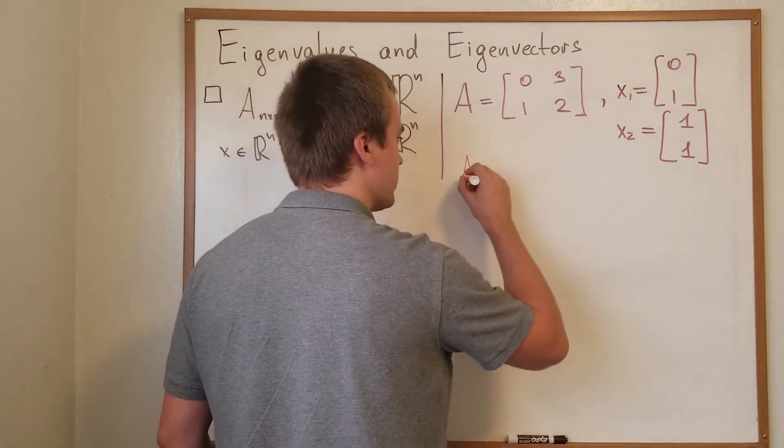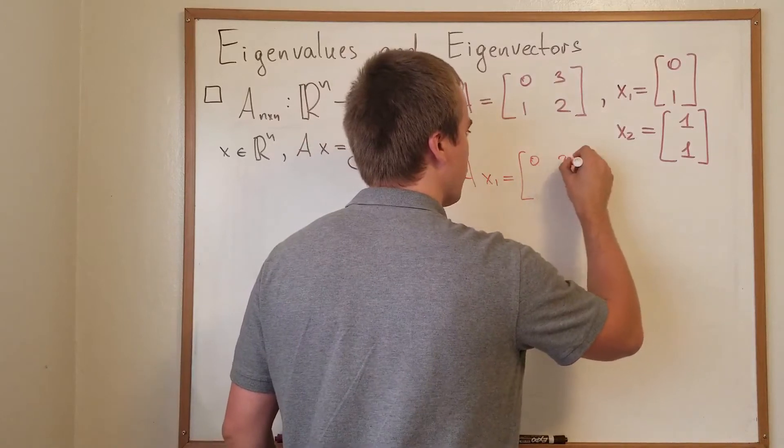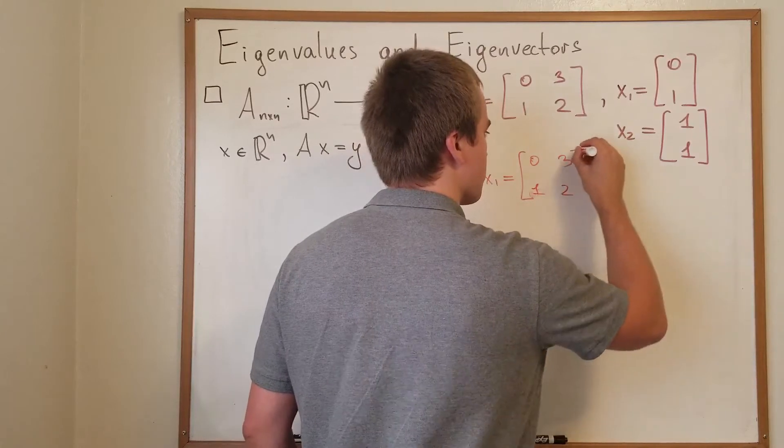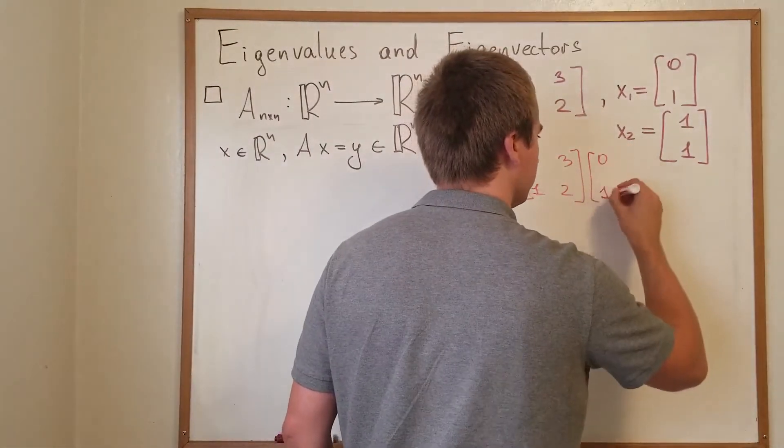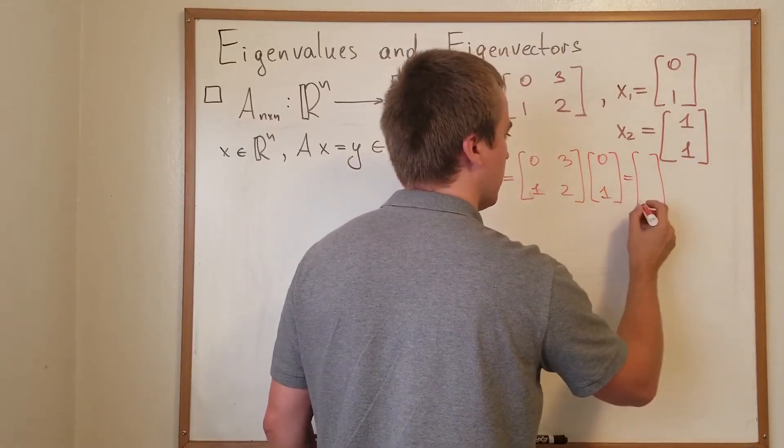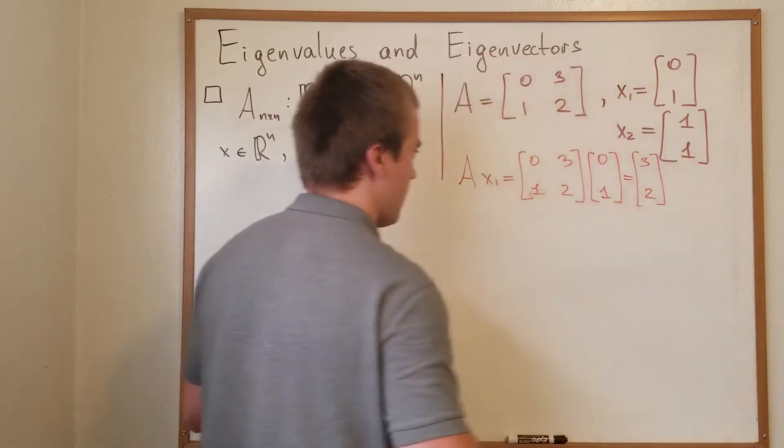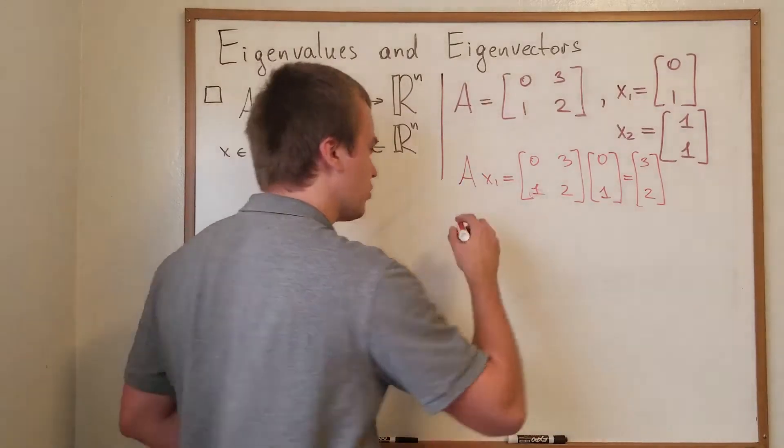So for the first one I will have Ax1 equals [0, 3; 1, 2] times [0, 1], and from here we know that we're gonna get [3, 2]. And then I'm going to take a look at this and see there is no difference. So let's do another one.